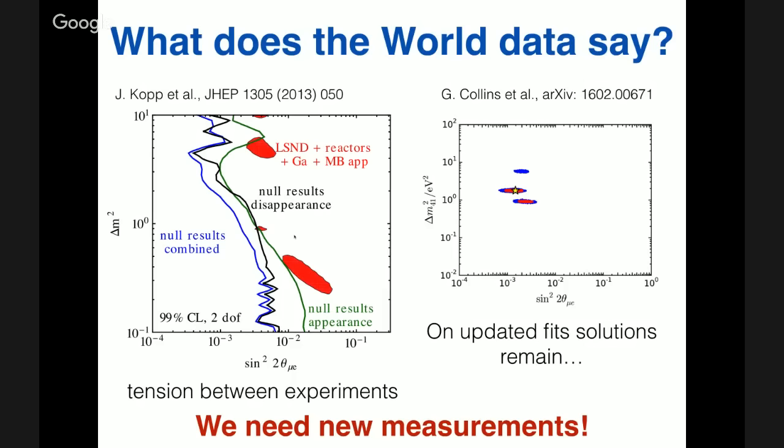Looking at the global picture, there is a very large tension. In a plot by Jochen Kopp, the blue line shows the 99% exclusion — excluding everything to the right of it — while the solutions for LSND and reactors are the red balloons, which lie to the right of the blue line. Subtracting appearance and disappearance results and performing a global fit, there are still some solutions that remain. We need new measurements to really disentangle what is going on.